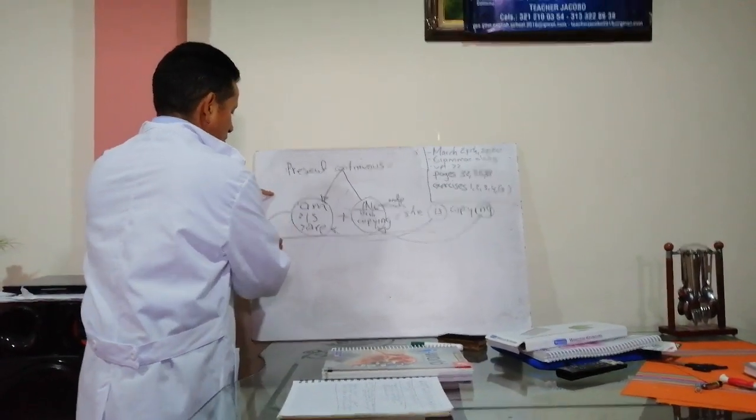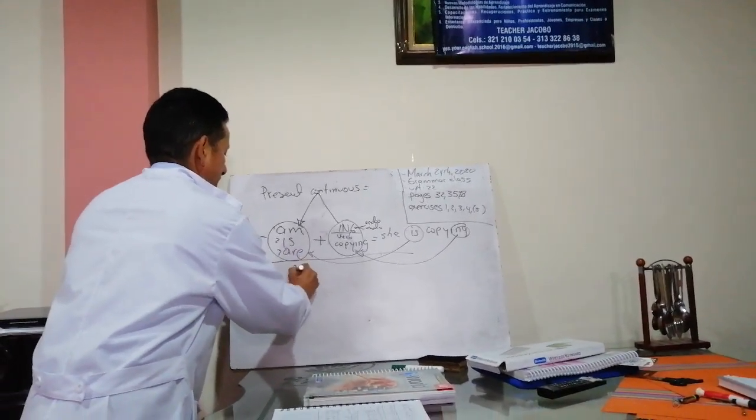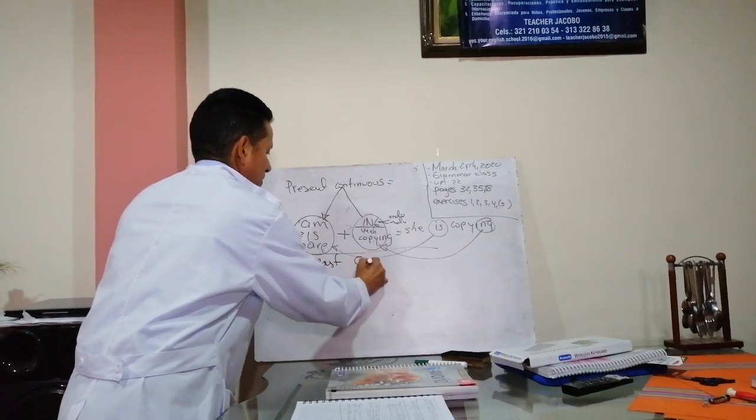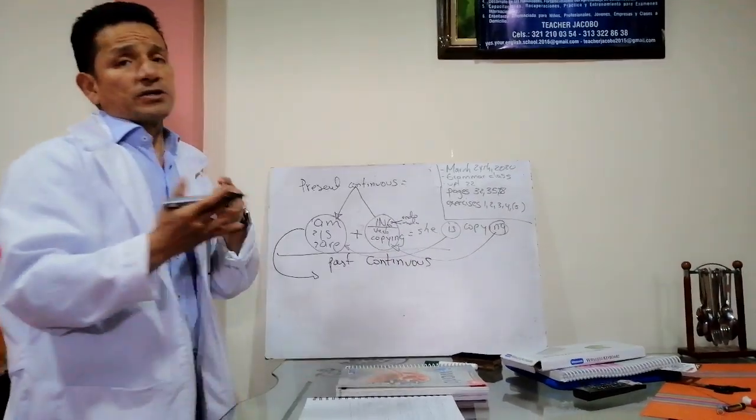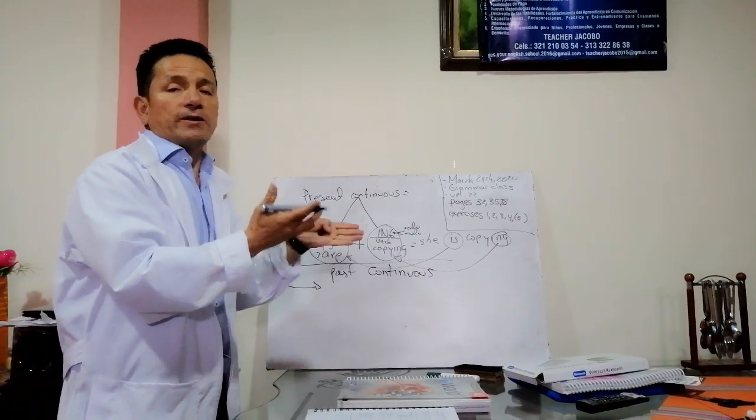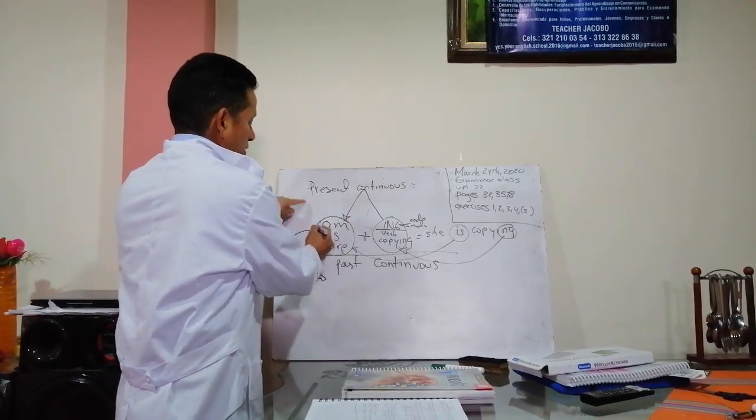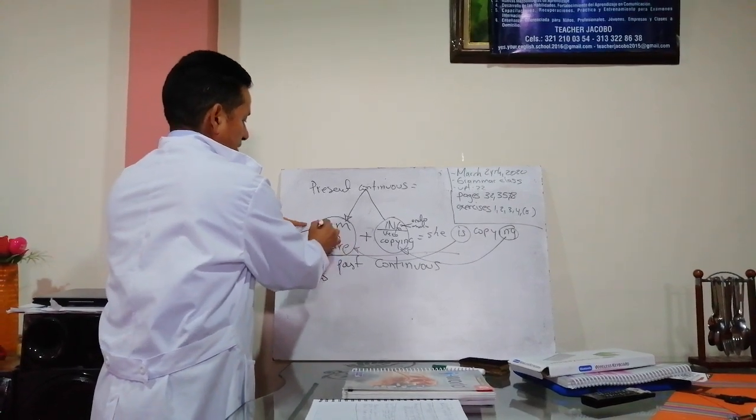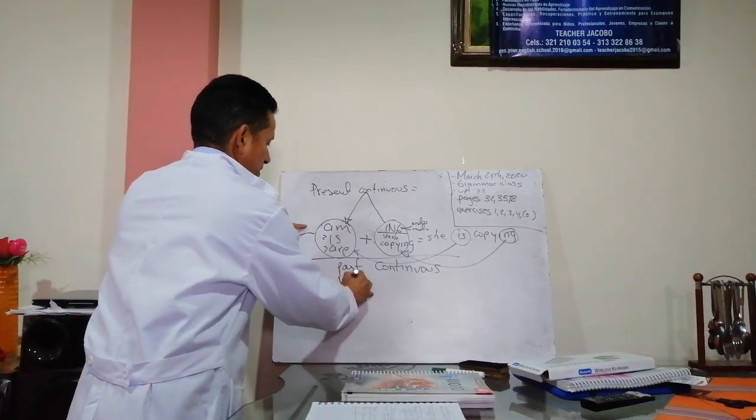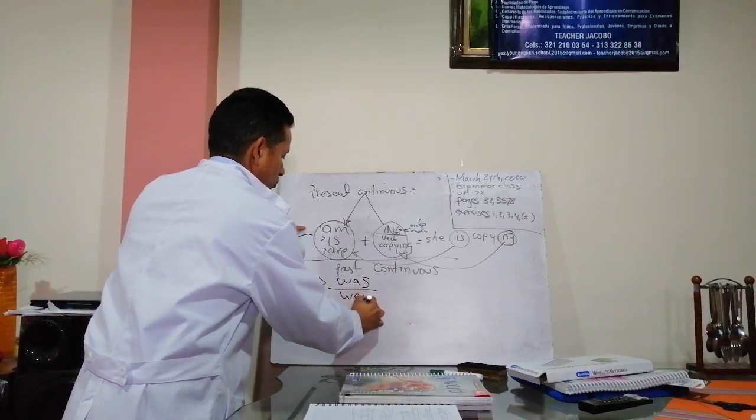Entonces, si esto lo colocamos en pasado, entonces, past continuous, past continuous will be the same. Será lo mismo porque colocamos el verbo to be pero ahora ya en pasado. Entonces, si en presente son tres palabras, en pasado solo son dos. Was y la palabra were.